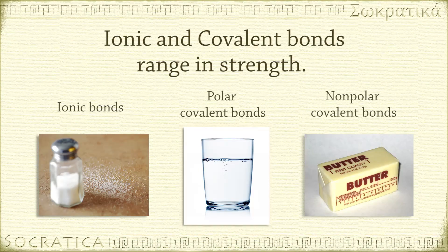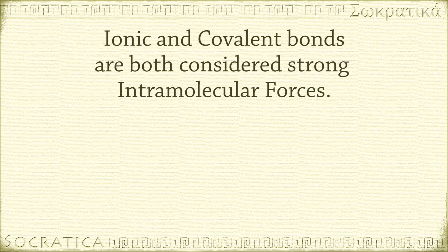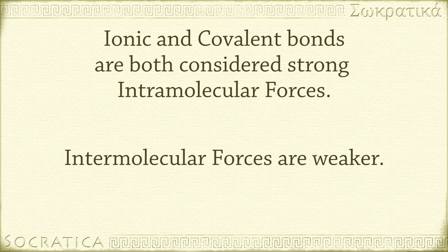So you can see there is a range of strengths, but ionic and covalent bonds are both considered strong bonds — the intramolecular forces that hold a compound together. In contrast, intermolecular forces such as van der Waals forces, which exist between different compounds, are examples of bonds which are much weaker. We'll talk about these weaker bonds in another video.